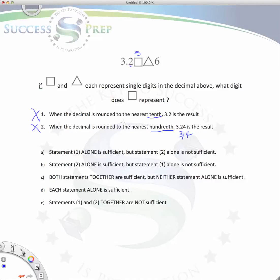When you look at both statements, you still have the same issue. There is no way to independently find the value of the square, just one unique value. And as a result, the answer will have to be E because there's just no way to determine the exact value of square. Thank you.